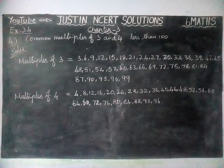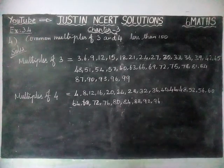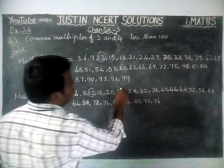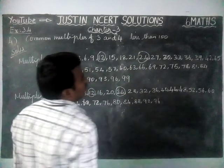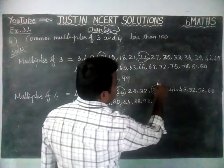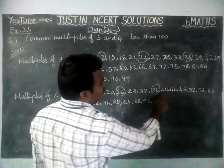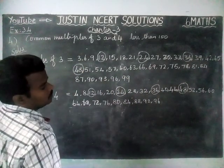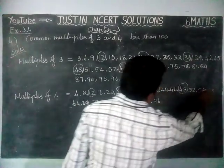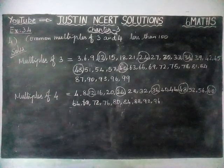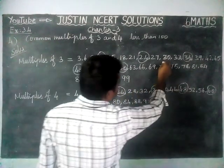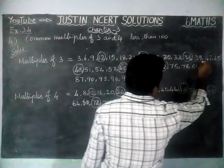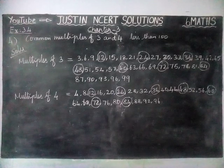Now in this, we have to find all the common multiples. The first common multiple is 12. Next common multiple is 24. After that, common multiple is 36. Then common multiple is 48. Next, common multiple is 60. Then 72. Then 84. Next, 96.